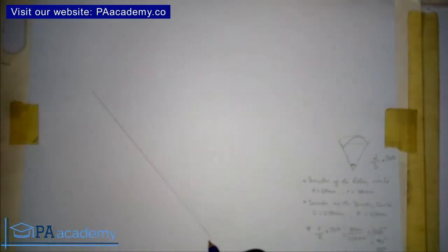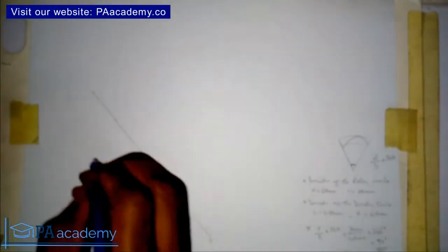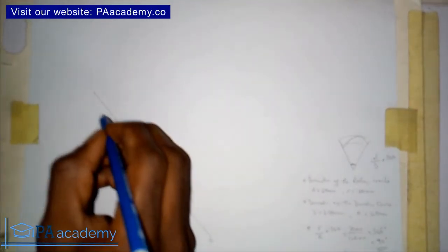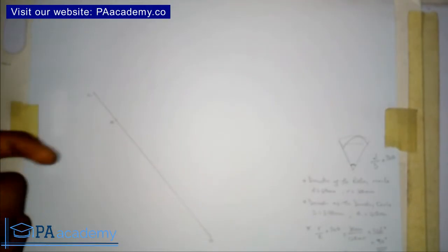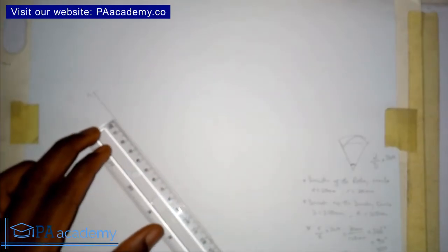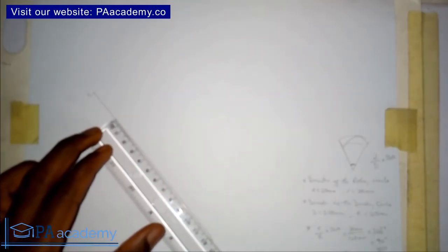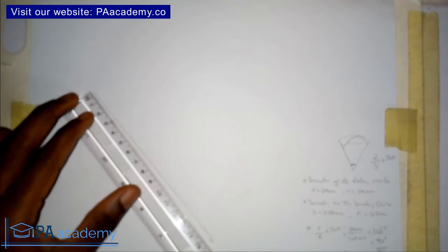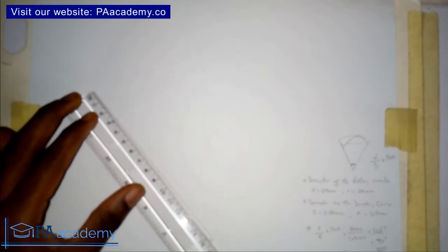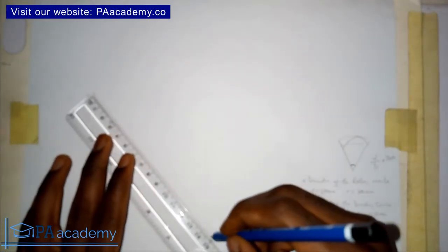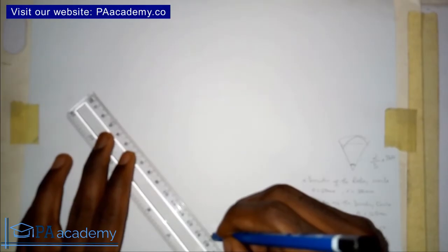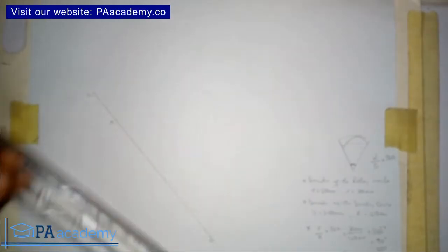Let's call the center point O, the far end point A, and the 30mm mark point C. The distance from A to O represents the radius of the directing circle, which is 120mm. The segment from O to C at the top represents the radius of the rolling circle, which is 30mm. Let me extend point O a bit so I can place my protractor on it.